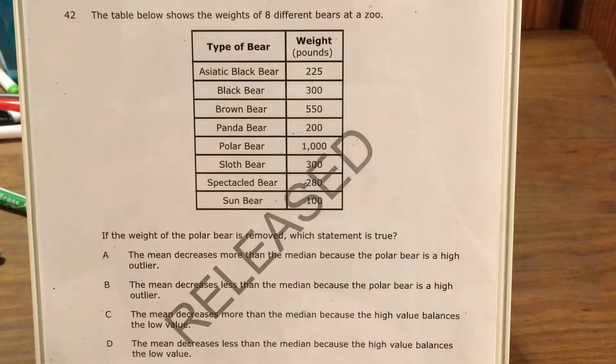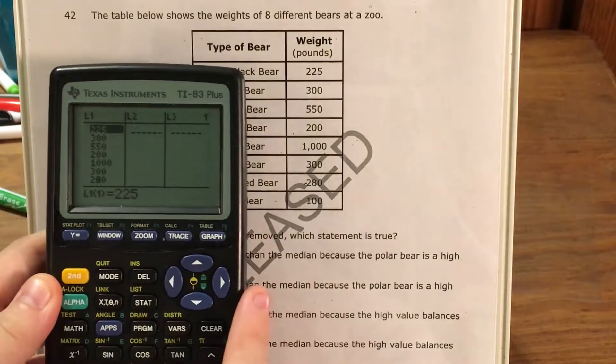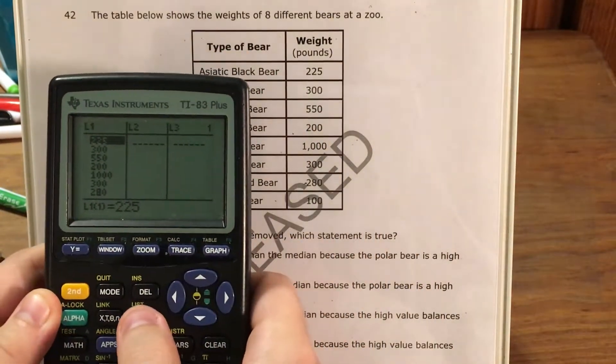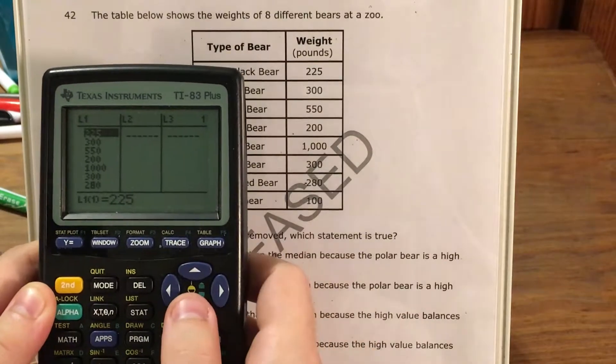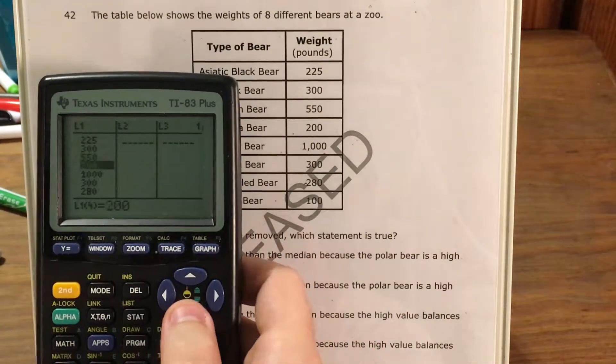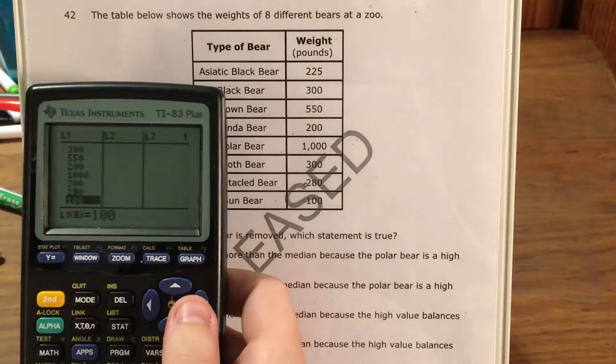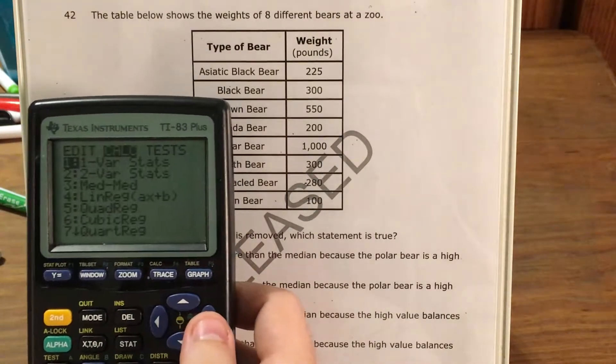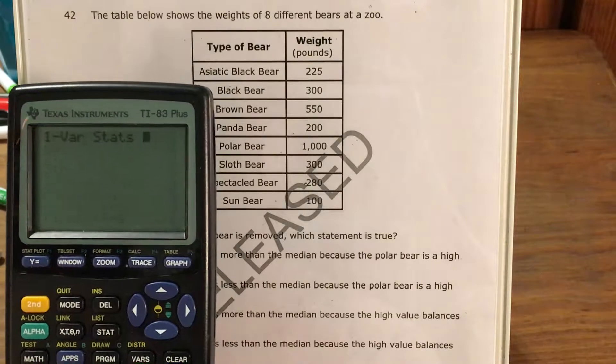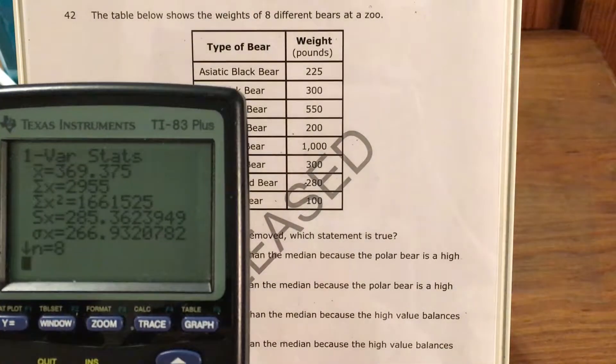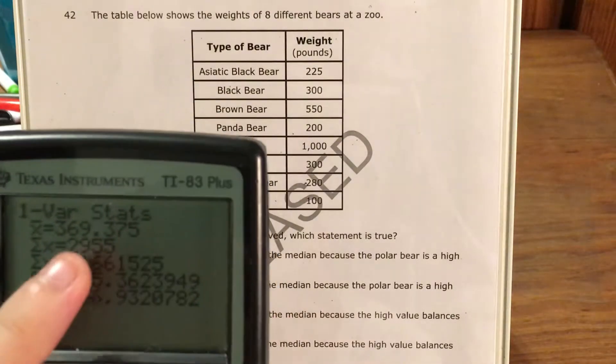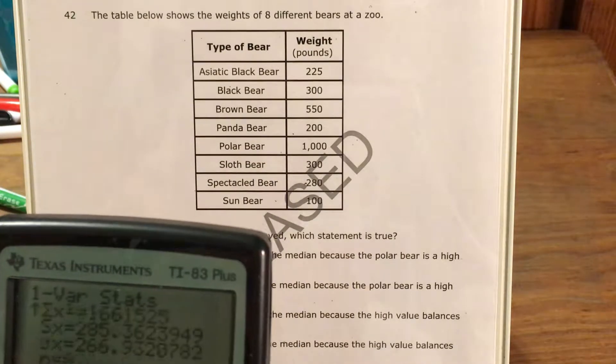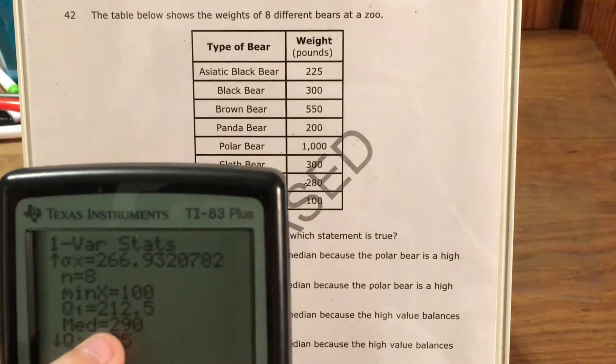So to get started with this I've gone ahead and already typed in all of this set of data into my stat edit menu so I would press stat, press edit, and I would come here and type these in. I already have all eight of these typed in so I just need to press stat again, go right to the calculate menu, click one variable statistics, and see what it comes up with. Alright so my mean is 369 and 375 hundredths, and then my median is 290.